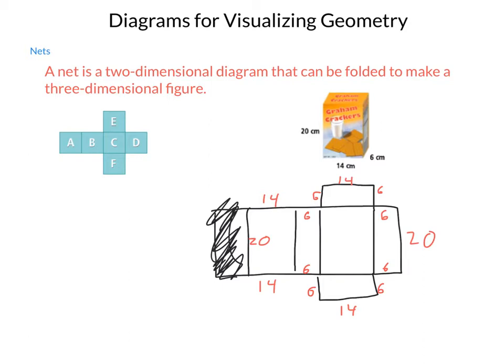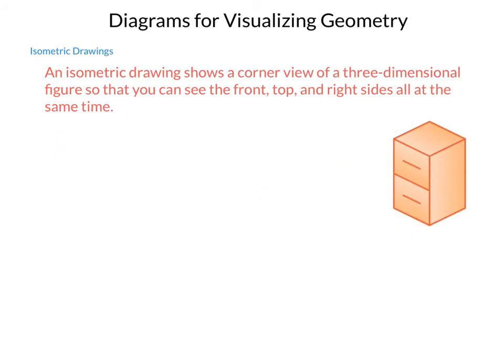Next, we have what is called an isometric drawing, and this shows a corner view of a three-dimensional figure so you can see the front, top, and right sides all at the same time. And when we are done, we typically label the front and the right.